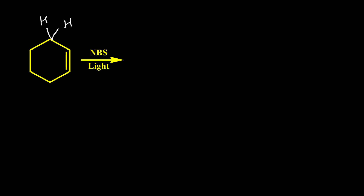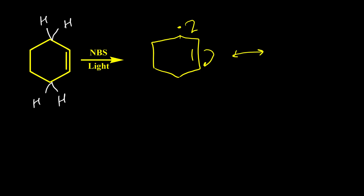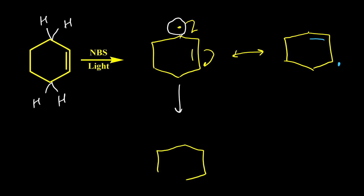Here is the next example. First we need to identify the allylic positions. These two carbons are attached to the double bond and they are allylic positions. So these hydrogens can be replaced by bromine. Br radicals abstract one of these hydrogens and form an allylic radical. This allylic radical has another resonance form — we have the double bond here and the radical here. But these two resonance structures are identical and they produce the same product. Then for the next step, this radical takes one bromine atom and makes a C–Br bond, so instead of having a radical on the carbon we have a bond between that carbon and bromine.